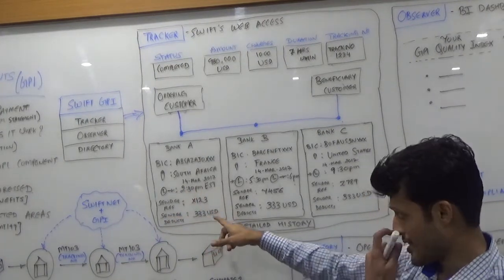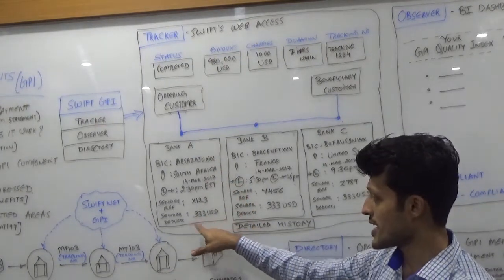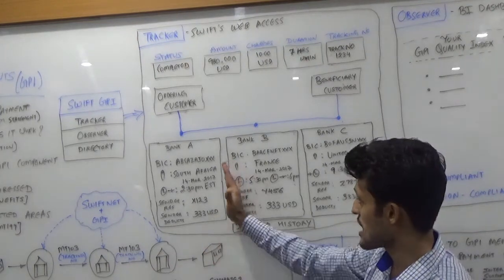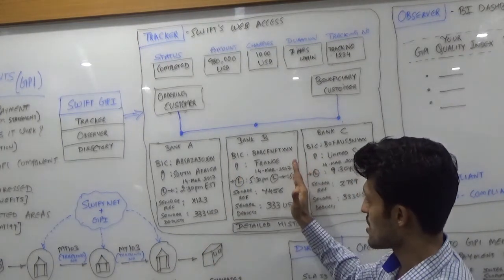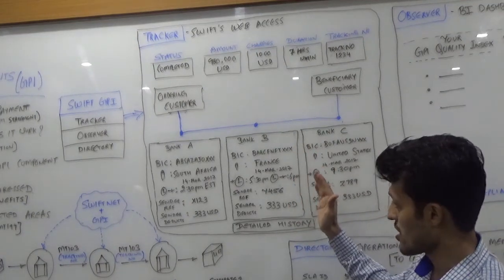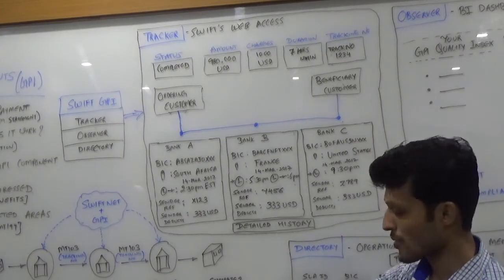The sender reference number which is originated by bank A, and the sender deduct - these are the charges which are deducted by this particular bank. The same repetition happens with the intermediary bank which is residing in France. And finally, the Bank of America which is residing in United States, which is the corporate 2 or the seller's bank.